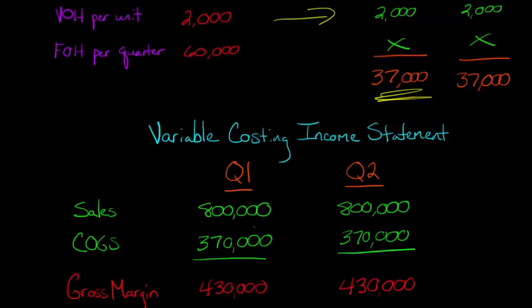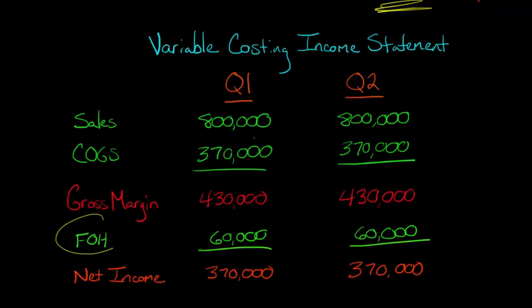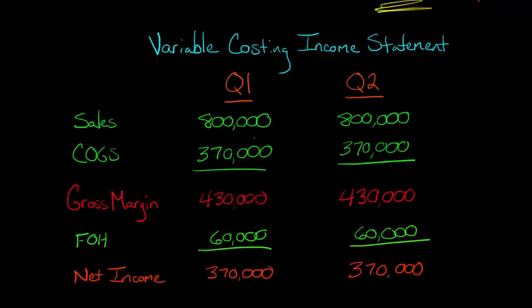Gross margin is just sales minus cost of goods sold, and in each period the gross margin is exactly the same because nothing has changed about our cost structure. Now, what about that fixed overhead? We're not ignoring it — we treat it as a period cost, so we subtract it as a separate line item after gross margin. It was $60,000 in each quarter, so we take $60,000 in each quarter as an expense. Our net income is $370,000 in each quarter.